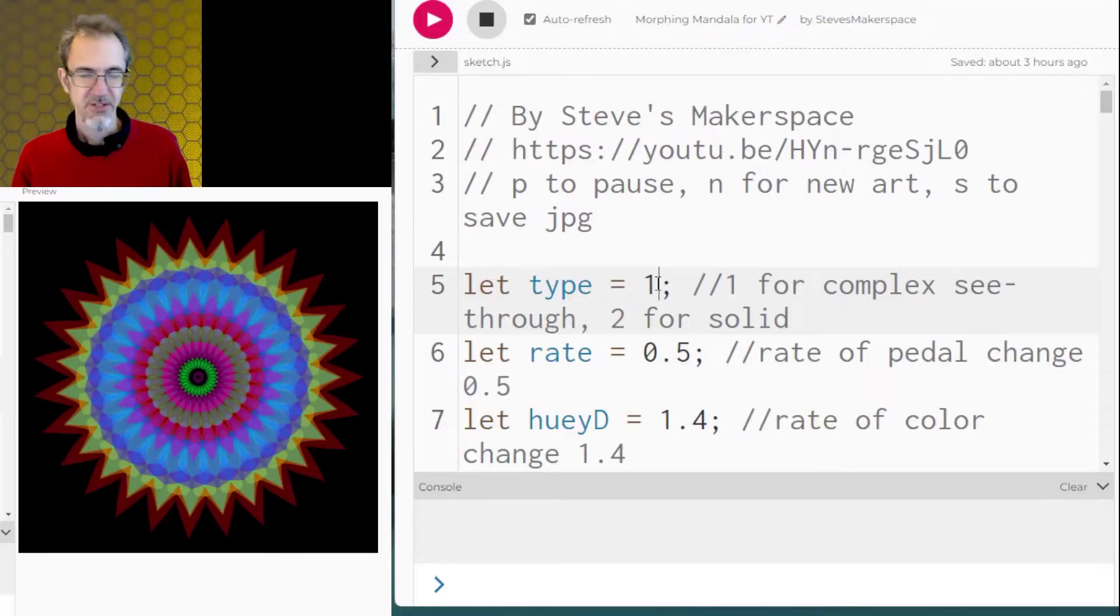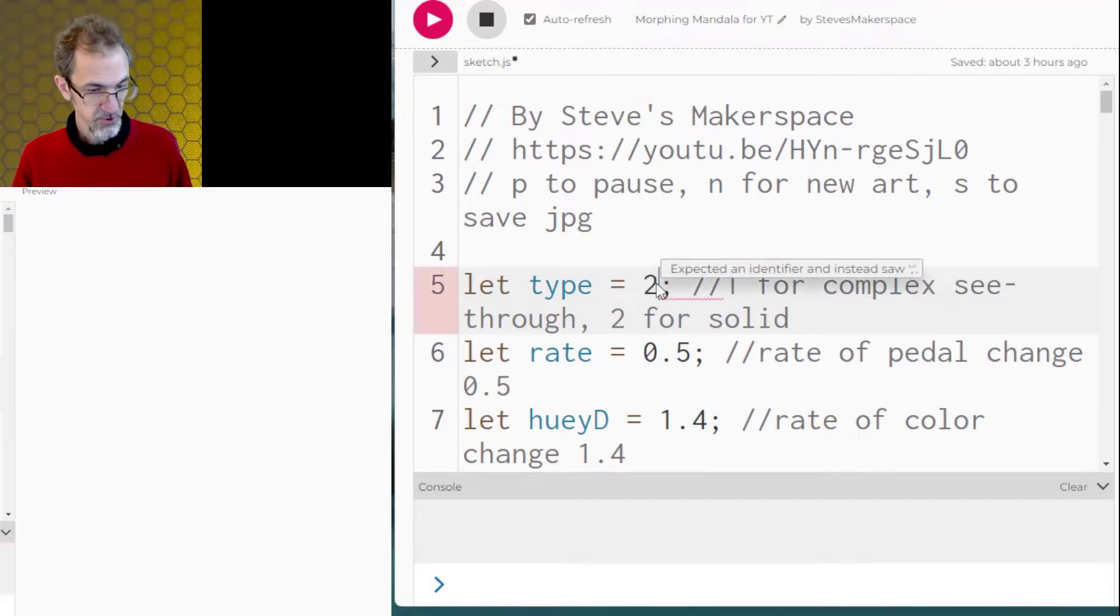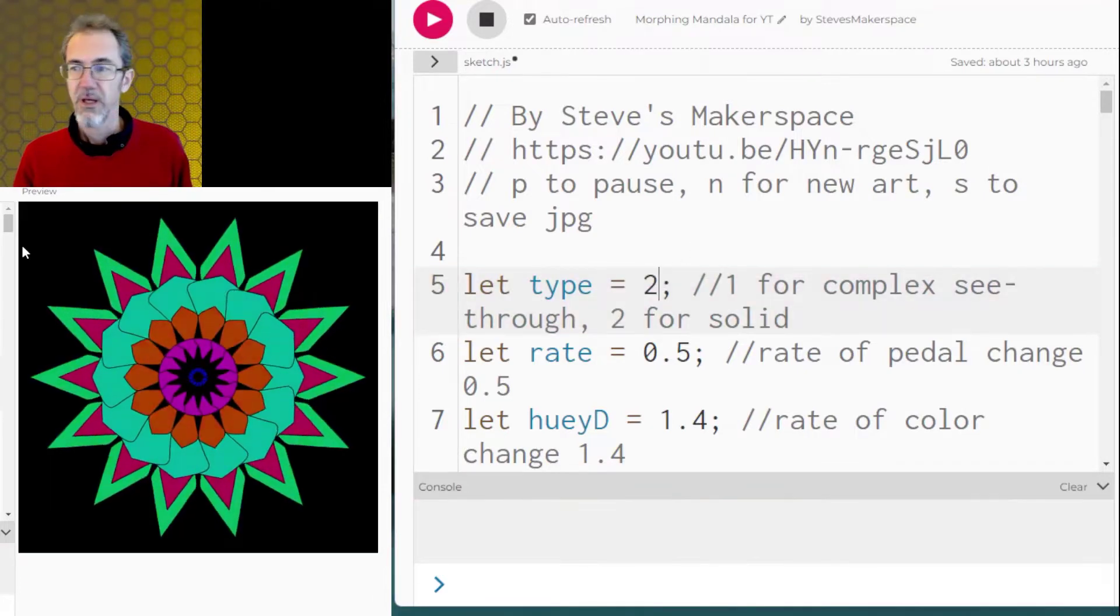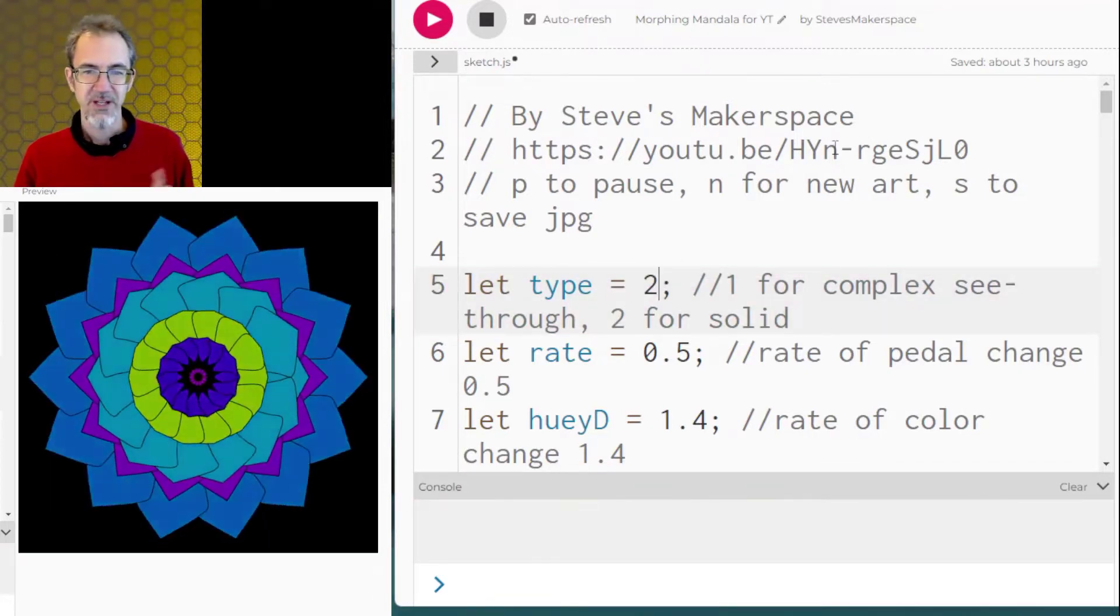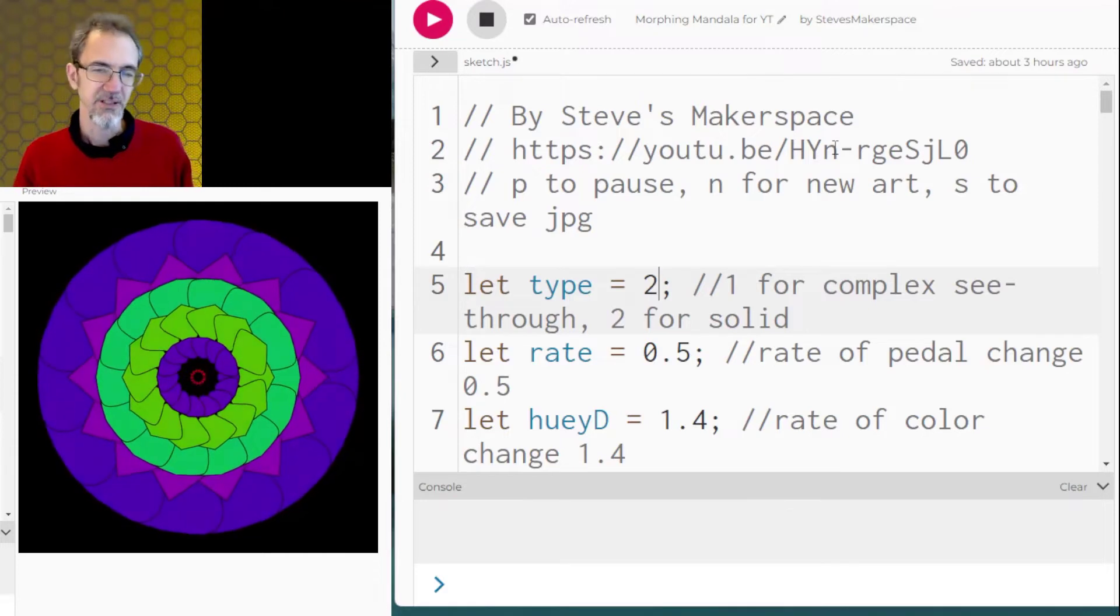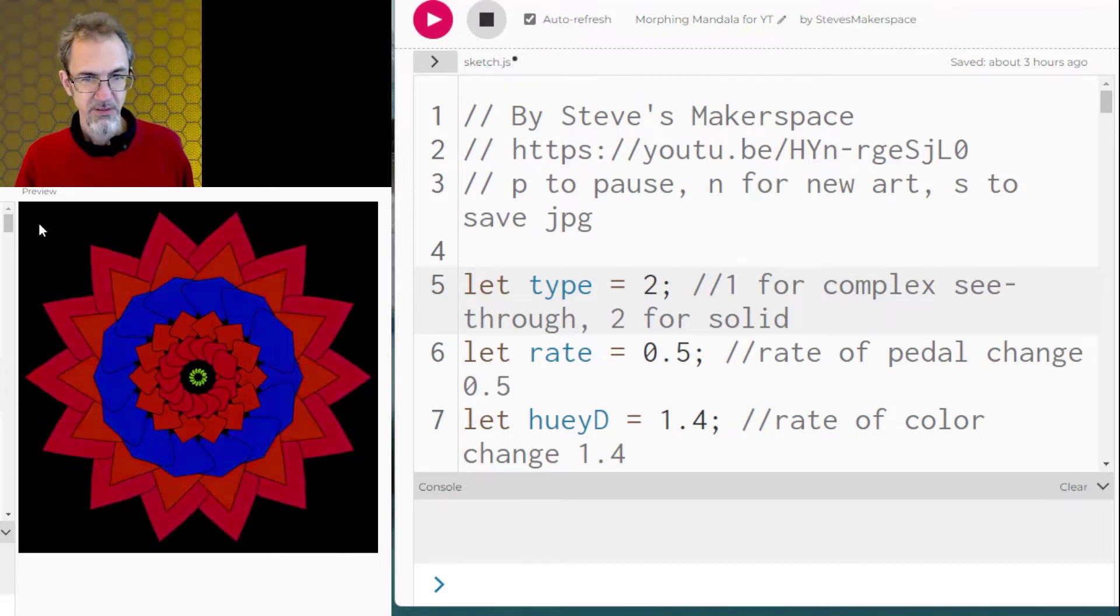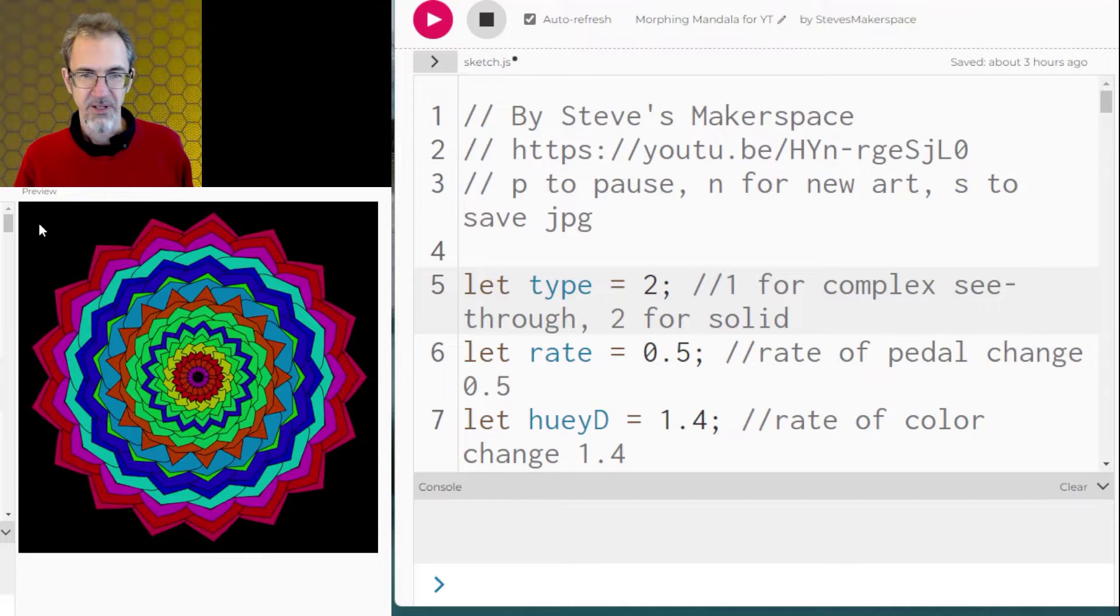We can also change the type. Right now it's doing complex and mostly see-through but I can change it to type 2 and now we're getting something that's solid and it has an outline to it. Let's do new art and there we go.